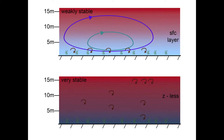The Z-less condition extends downward so close to the ground that a surface layer cannot be defined. In fact, primary generation of turbulence sometimes occurs at higher levels and then intermittently bursts downward toward the surface.